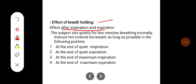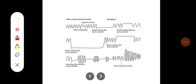To see the effect of breath holding: the subject sits quietly for a few minutes breathing normally, then is instructed to hold his breath as long as possible in the following positions: at the end of quiet inspiration, at the end of quiet expiration, at the end of maximum inspiration, and at the end of maximum expiration. The breath holding time is more after quiet inspiration than after quiet expiration.